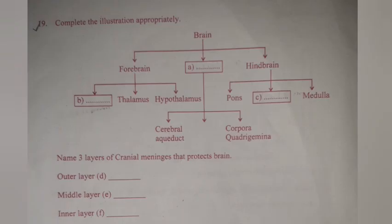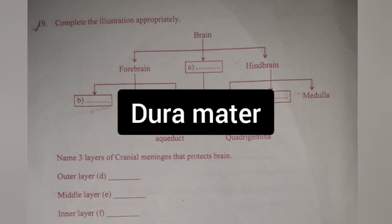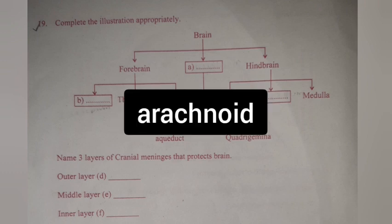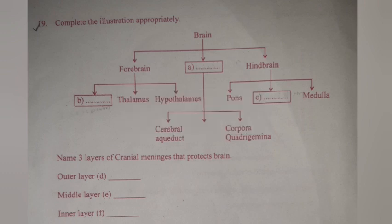Question 19: Complete the illustration appropriately. Answer: A. Midbrain. B. Cerebrum. C. Cerebellum. Name three layers of cranial meninges that protect the brain. Outer layer D: Dura mater. Middle layer E: Arachnoid. Inner layer F: Pia mater.